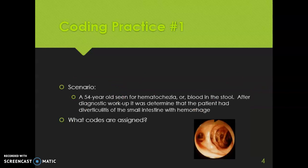Let's do a practice case. We have a 54-year-old patient being seen for hematochezia, or blood in the stool. After diagnostic workup, it is determined that the patient has diverticulitis of the small intestine with hemorrhage. What codes are assigned?